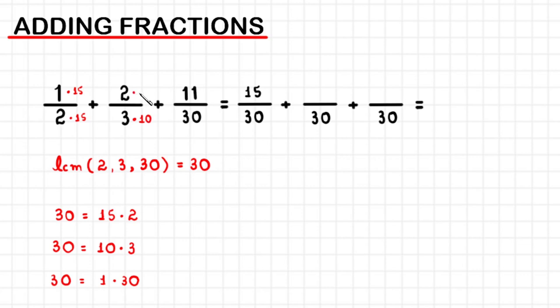So, we are going to multiply the 2 on top by 10 as well. 2 times 10 equals 20. We can say that 20 over 30 is a fraction equivalent to 2 thirds.